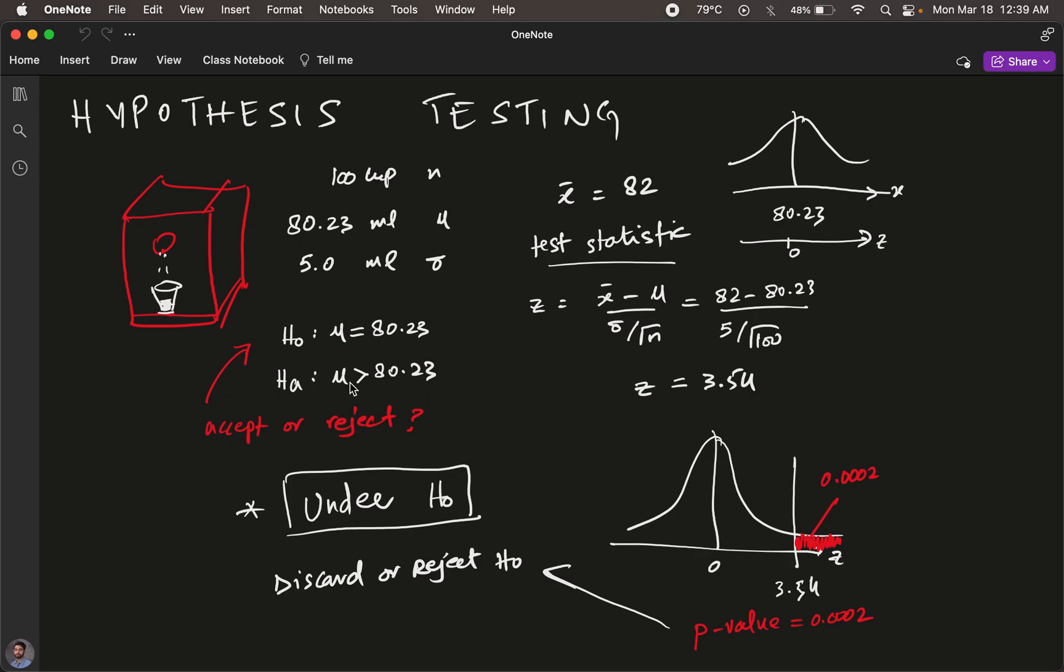We set that up as our alternative hypothesis—whether the average value is greater than 80.23—and set the null hypothesis at the base case, the calibrated 80.23 value. We computed a test statistic on the sample mean. We obtained a sample mean out of 100 cups, which turned out to be 82 milliliters.